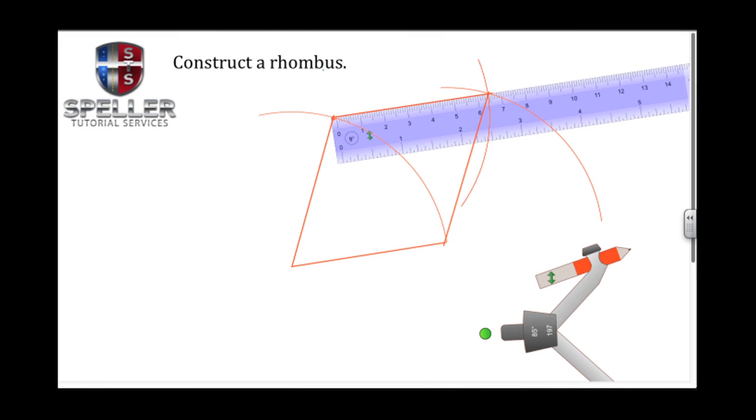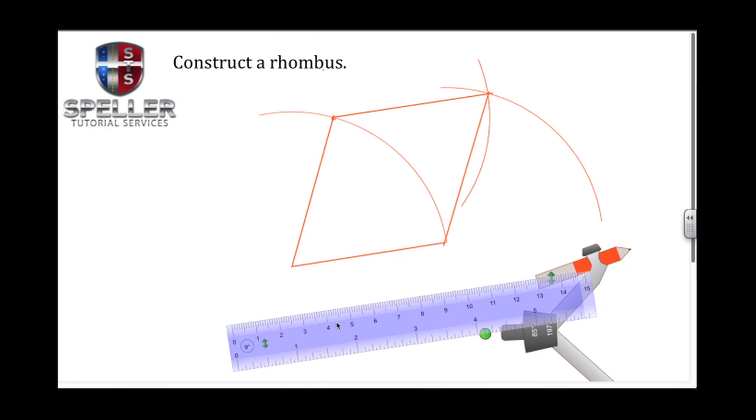All right, let me move the straight edge out of the way. Let's clear out some of these extra arcs here that we don't need, so we can get a better look at this rhombus that we've just created using a straight edge and our compass.